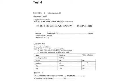Now turn to Section 1. Paul is renting an apartment. He has some problems with the property and has decided to report them to the housing agency. First, you have some time to look at questions 1 and 2. You will see that there is an example that has been done for you. On this occasion only, the conversation relating to this will be played first.